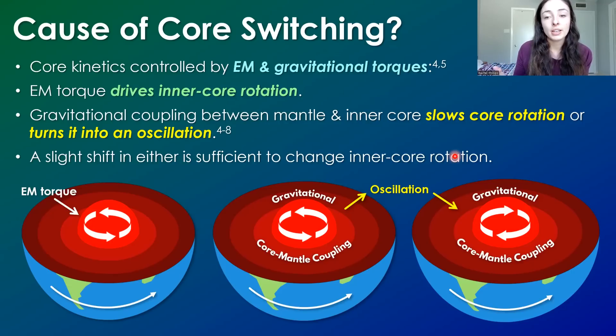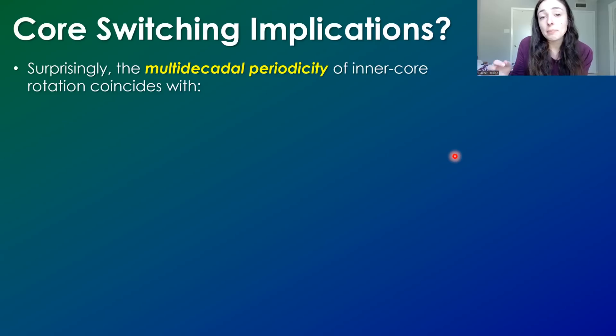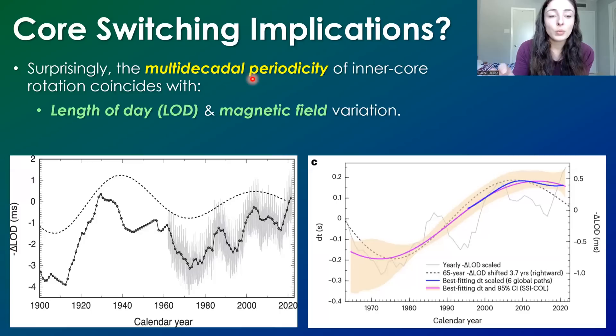So I didn't get a full sense in the paper of whether we know that's a consistent cycle or something that could be driven by random variations. And if anybody else knows, please comment down below which one it is. The answer is probably we don't know yet. And that's why this paper was written because current research is still going on. Now, what are the implications of the core switching? Well, surprisingly, the multi-decadal periodicity of the inner core rotation coincides with variations in length of day and the magnetic field.